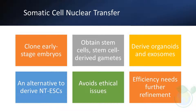SCNT cloning is a widely used technique to clone early-stage embryos and obtain stem cells, stem cell-derived gametes, organoids, exosomes, and transgenic animal models for biomedical applications. SCNT cloning is an alternative means of obtaining nuclear transfer embryonic stem cells, which negate dependence on embryos to generate ESCs.